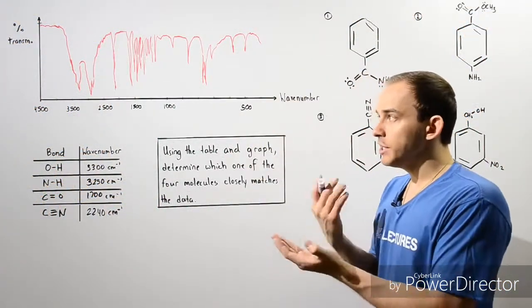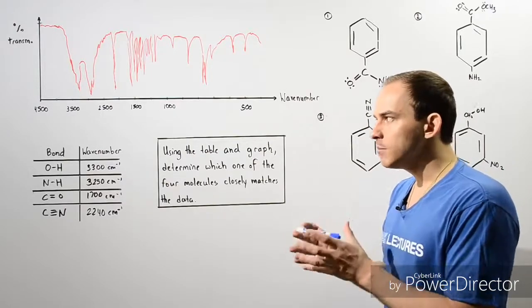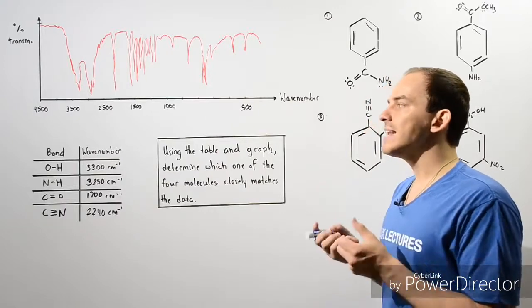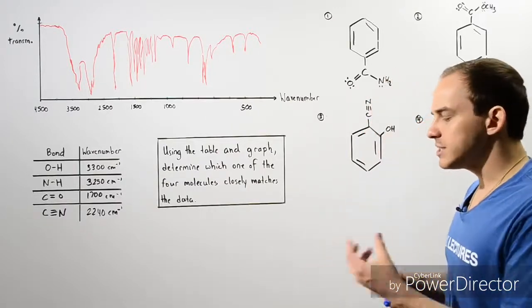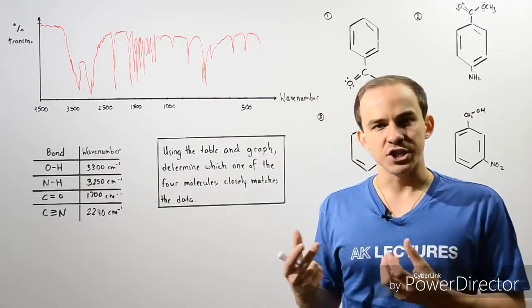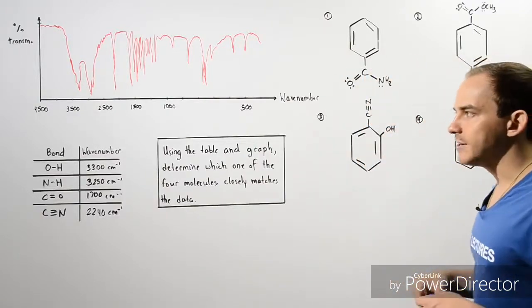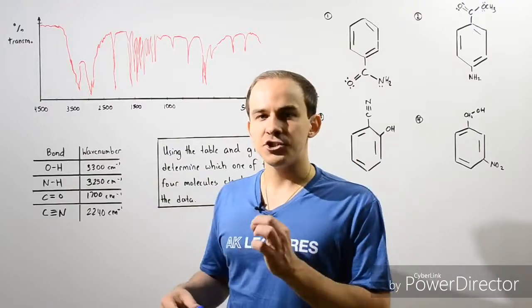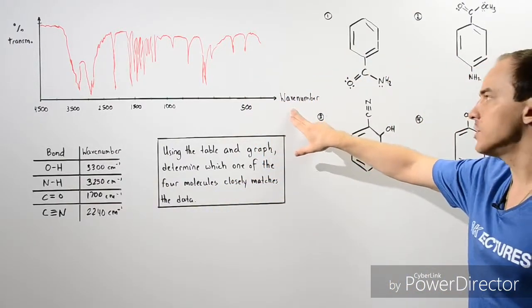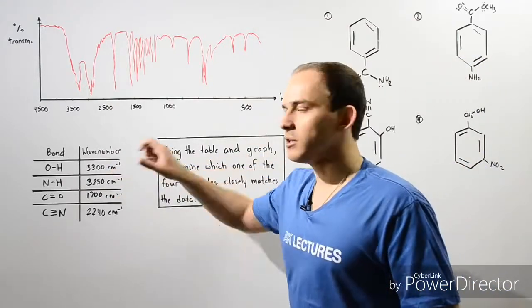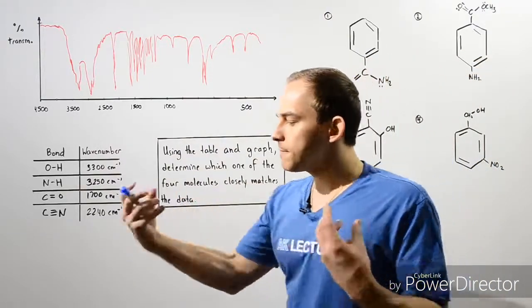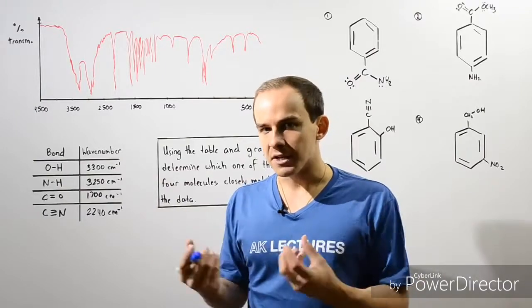We can use infrared spectroscopy to determine the different types of functional groups and the different types of bonds that our molecule contains. It uses the following principle: every chemical bond oscillates with a specific frequency that corresponds to a certain amount of energy. The frequency of oscillation of any chemical bond is related to a quantity known as the wave number, given in units of reciprocal centimeters — centimeters to the negative one.